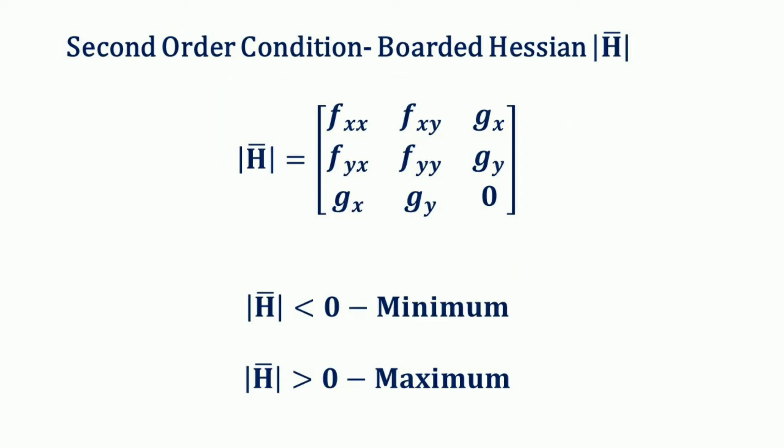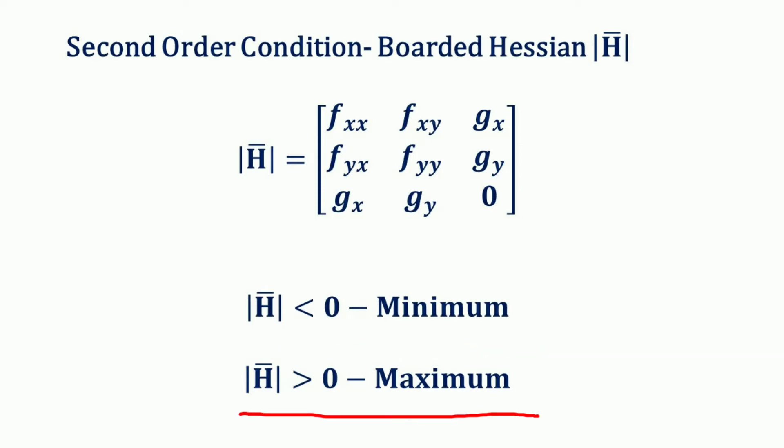Looking at the determinant value of the Bordered Hessian, we can check whether the function is maximized or minimized. If the determinant value is less than 0, then the function is at a minimum. If the determinant value is greater than 0, then the function is at a maximum.